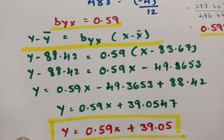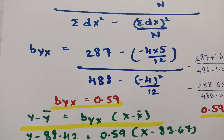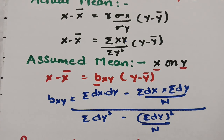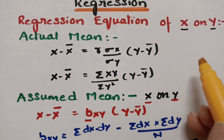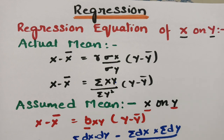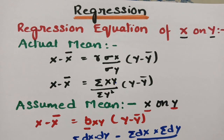This is how we solve regression problems using the assumed mean method. Each step is crystal clearly explained — why we take an assumed mean, when to use the actual mean, the formulas for both, and the regression lines of x on y and y on x. If you learned from this, please share it with as many friends as you can, spread the knowledge, check the playlist for more videos, and stay connected. Thank you so much for watching.